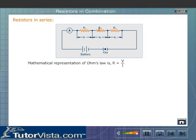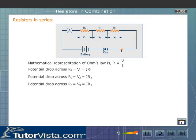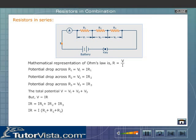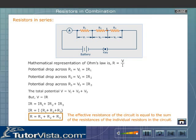In a series circuit, the potential drop across each resistor varies. Hence we calculate the potential drops V1, V2, and V3 across R1, R2, and R3 respectively. The total potential V = V1 + V2 + V3. But V = IR, so IR = IR1 + IR2 + IR3. Therefore, R = R1 + R2 + R3. The effective resistance of the circuit equals the sum of the resistances of the individual resistors in the circuit.